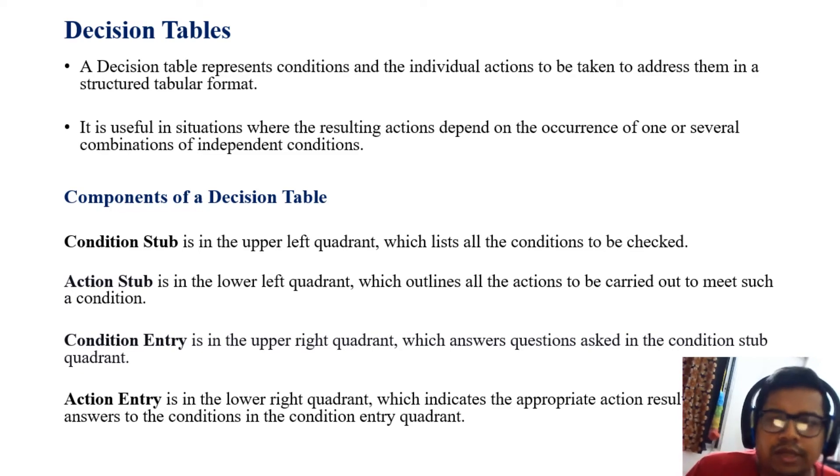Components of decision tables: there are four such components. The condition stub is the upper left quadrant that lists all conditions to be checked. Action stub is the lower left quadrant that outlines the actions to be carried out to meet such a condition. The conditional entry is the upper right quadrant which answers the questions asked in the conditional stub quadrant. Action entry is the lower right quadrant which indicates the appropriate action resulting from the answers to the conditions in the condition entry quadrant.